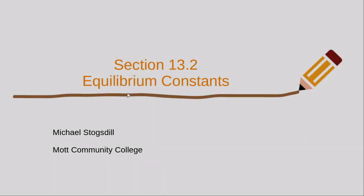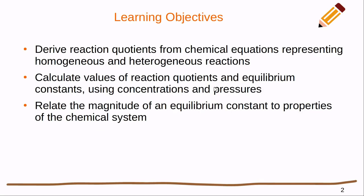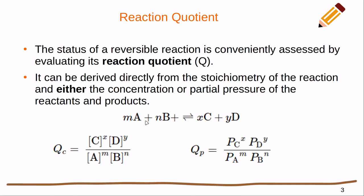In this video we're going to be covering section 13.2 equilibrium constants. We're going to learn how to derive reaction quotients from chemical equations representing homogeneous and heterogeneous reactions, calculate values of reaction quotients and equilibrium constants using both concentrations and pressures, and relate the magnitude of an equilibrium constant to properties of the chemical system.